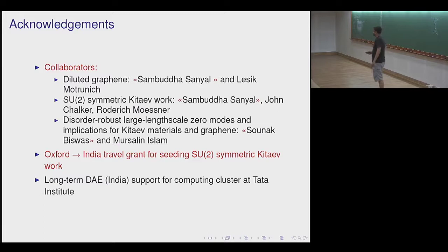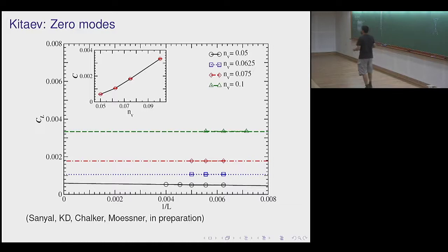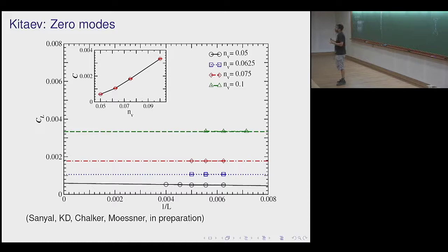The Curie constant C is directly the density of zero modes.